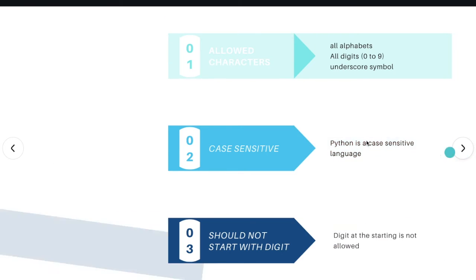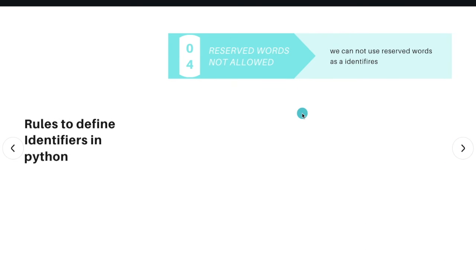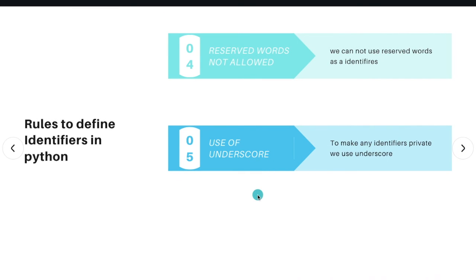Rule number four is that we can't use reserve words as an identifier — we will discuss reserve words shortly. Rule number five is the use of underscore: if we use an underscore at the starting of any variable, function, or class, that means that variable, function, or class is private.